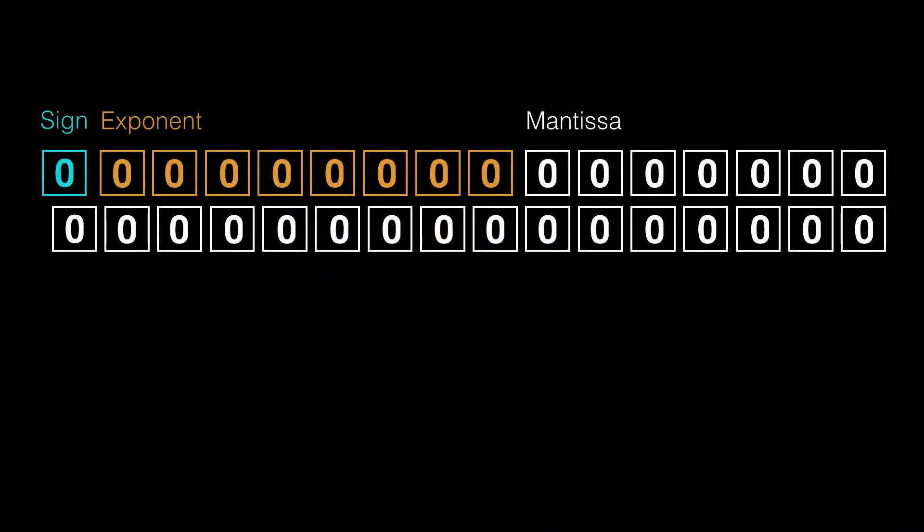A couple of other numbers you can represent. Everything is zero, then the number is zero. The sign bit doesn't really matter. The sign bit is set. Everything else is zero. That's still zero. Sometimes that's called negative zero.